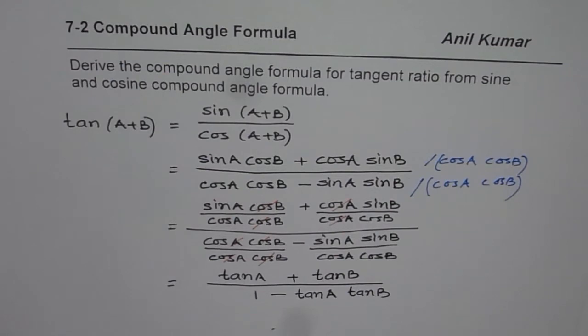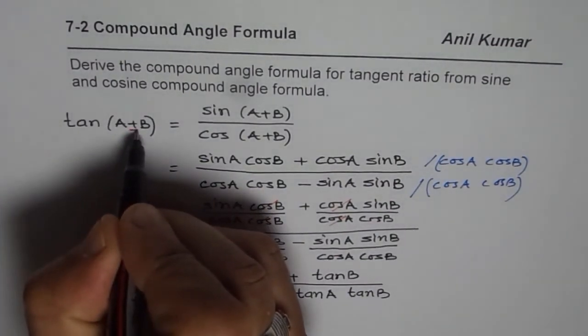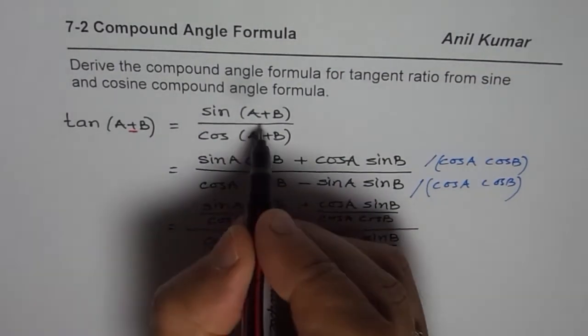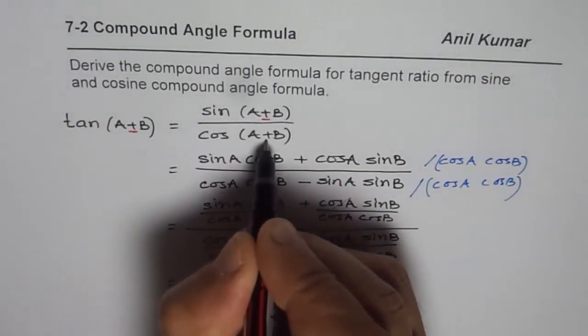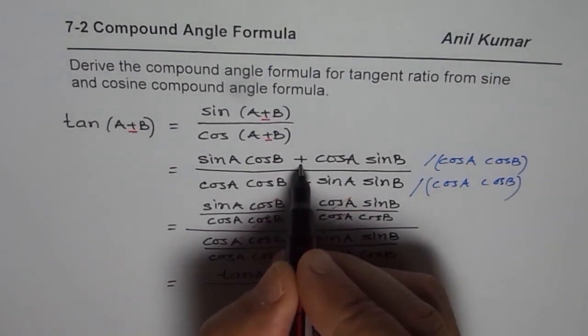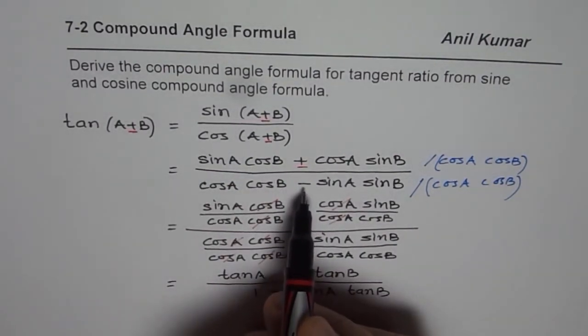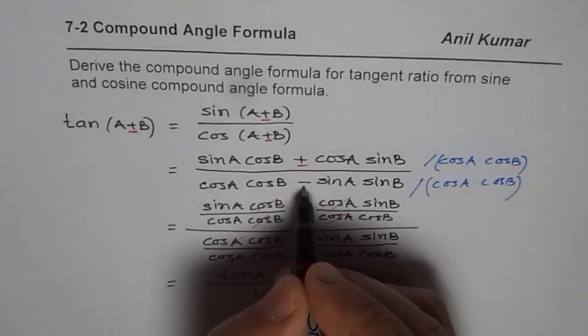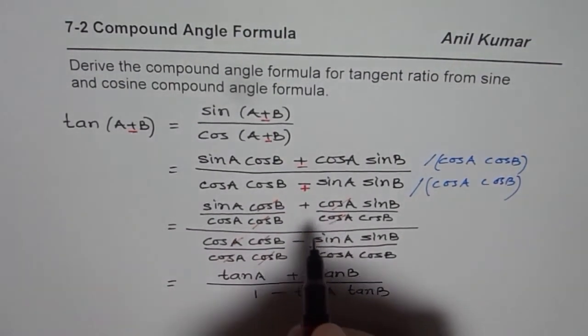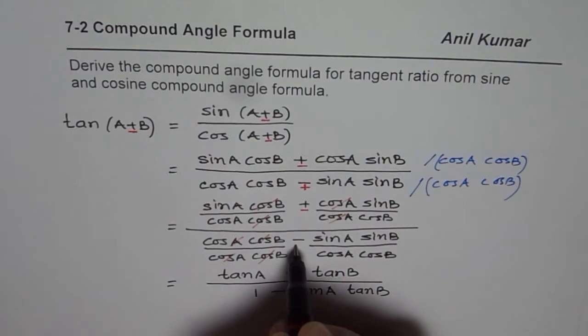Now, if you need to find the formula for tan of A minus B, in that case, we have to just interchange. Let me just make that change. Follow these steps. So, plus becomes minus, and minus becomes plus. I am writing that sign underneath. So, it becomes like this.